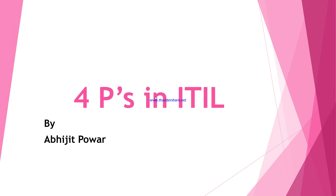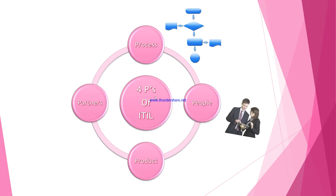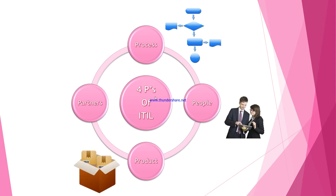In this video we are going to see the Four P's in ITIL. This is a new series we are starting related to ITIL, which stands for Information Technology Infrastructure Library. This is the first video regarding ITIL, and the Four P's are an important point within it. The four P's are: Process, People, Product, and Partners.